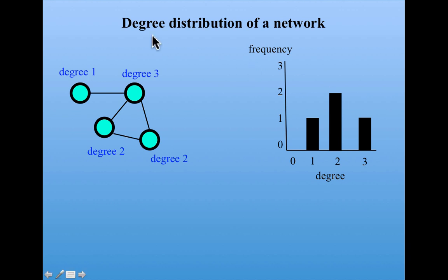Now, let me introduce the concept of a degree distribution of a network. A degree distribution shows for each possible degree, the number of nodes in the network that has that degree. For example, this node has degree 1, and it's the only node that has degree 1. So, we have a bar that goes up to 1 here. There's two nodes that have degree 2, and one node that has degree 3.